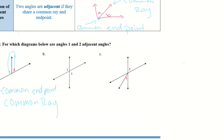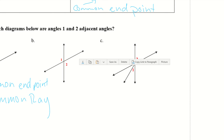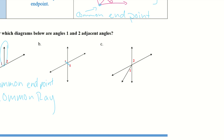Let's take a look at B and C. For B, they're right across from one another, so they don't have a common ray. The two rays for angle 2 are this ray and this ray, and neither one has anything to do with angle 1. Same thing with C — if we look at angle 2, we have this ray and this ray, and angle 1 is neither here nor here. So they don't have a common ray either.